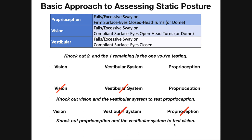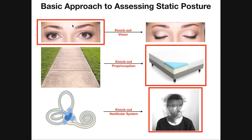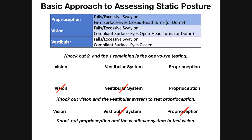How would I test vision? I just need to knock out the other two — the vestibular system and proprioception. I can't knock out vision because that's what I'm testing. So I'd move onto a compliant surface to knock out proprioception, and do those head turns back and forth to knock out the vestibular system. The general idea is: if you want to test any one of these, you need to knock out the other two.